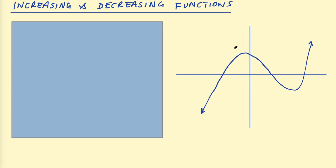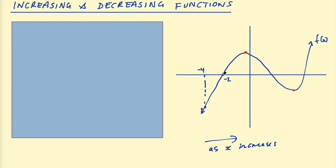We can say this function is increasing up to this point here, and also we'll be looking at this interval between those two points. So we can say a function is increasing when, as x increases from left to right, the value of f(x) is increasing also. So for any value, let's say we look at the value of f(x) at negative 4, and then at negative 2 — the value of f(x) here is greater than at x equals negative 4, so it's higher up on the y-axis.